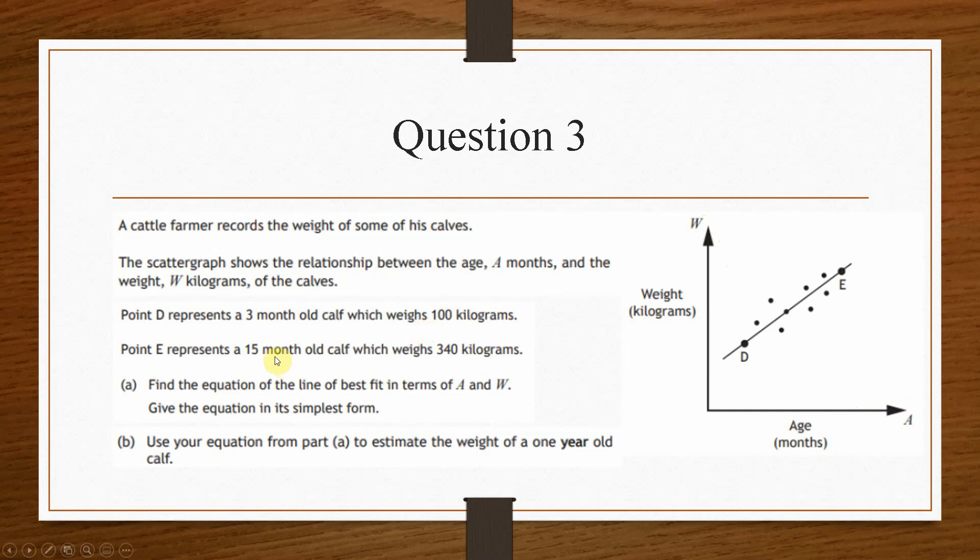So we've replaced x and y with A and W. And it tells us that point D represents a 3-month-old calf which weighs 100 kilograms. So that means that it goes along 3 on the x-axis and then up to 100. And likewise for E, it goes along to 15 and then up to 340.